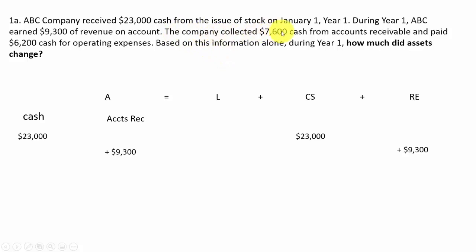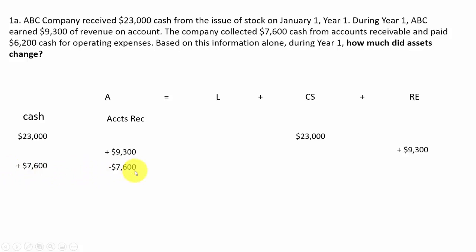The company collected $7,600 cash from accounts receivable. Cash goes up $7,600 on the asset side and accounts receivable goes down $7,600. We've got an increase in cash but a decrease in accounts receivable, and overall assets stayed the same. Next, we paid $6,200 cash for operating expenses — cash goes down $6,200 and operating expenses under retained earnings goes down $6,200, so both sides go down the same amount.